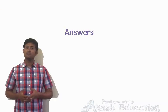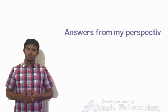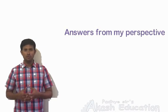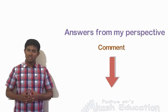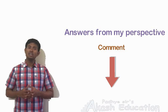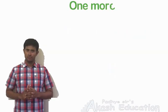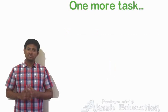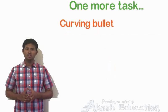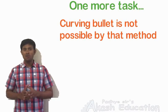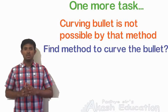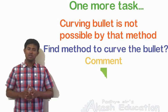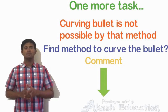These are answers from my perspective. You may use some other law or principle to prove the mistake. Do comment below if you find any other method to prove the mistake or any other mistake. I have one more task for you. In scene 3, you have seen why it is not possible to curve the bullet. However, it is possible to curve the bullet by some other method. You have to find out that method. You can write your answers in the comment section below.